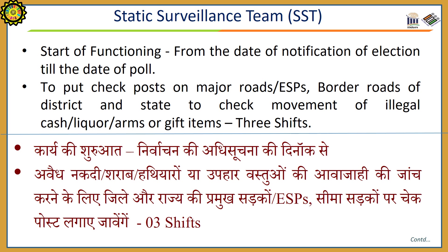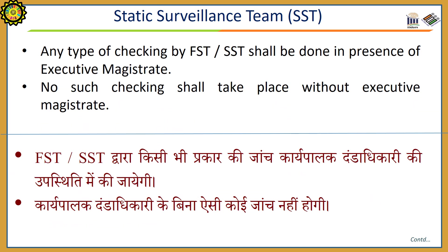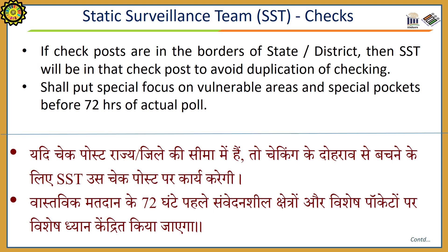The SST will put checkposts on major roads, expenditure-sensitive pockets, border roads of the district and state, to check movement of illegal cash, liquor, arms, or gift items. They will work in three shifts. Any type of checking by FST or SST shall be done in the presence of the executive magistrate — no such checking shall take place without an executive magistrate. If checkposts are on borders of the state or district, SST will be at the checkposts to avoid duplication of checking. SSTs shall put special focus on vulnerable areas and special pockets before 72 hours of the actual poll.